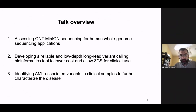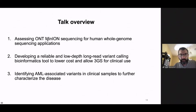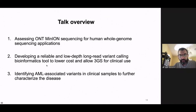Now I'll explain our results. We assessed the MinION sequencer from Oxford Nanopore for whole genome sequencing in humans and partially in patients. We developed a reliable low-depth long-read variant caller as a bioinformatics tool that lowers the cost of sequencing for Oxford Nanopore sequencers, but it also works on PacBio. We identified AML-associated variants in clinical samples that we are currently investigating. One reason we reassessed Nanopore accuracy is that previous assessments were from 2014 and 2015 and are outdated, as Nanopore has since released new chemistry and new flow cells.